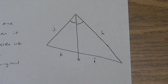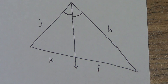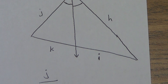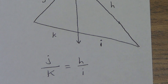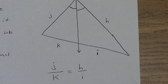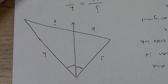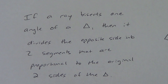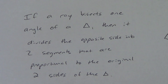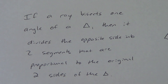Set up the proportion exactly the way it looks: J over K equals H over I. You could also do J over H, and then K over I. Or turn it all upside down: I over H equals K over J — that works too. Copy that down if you need to, and pause the video anytime. In the second video we're going to do a bunch of examples of all these theorems. Make sure you watch both videos for lesson 6.5.